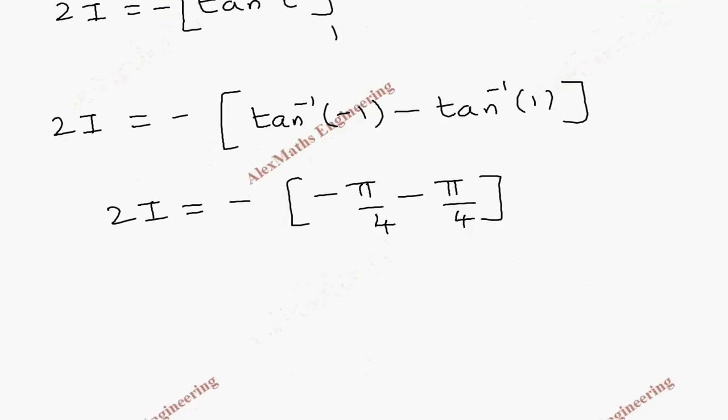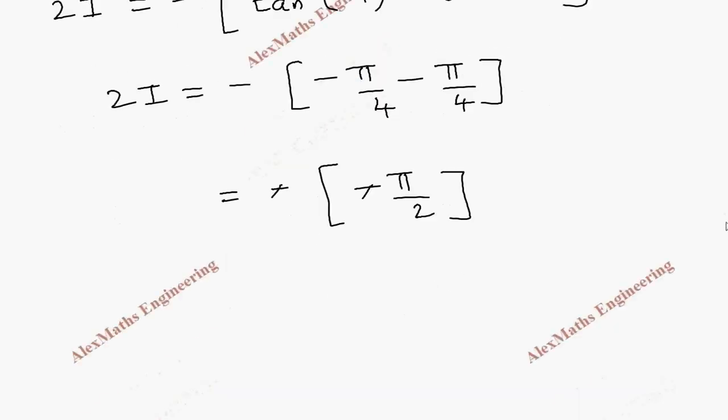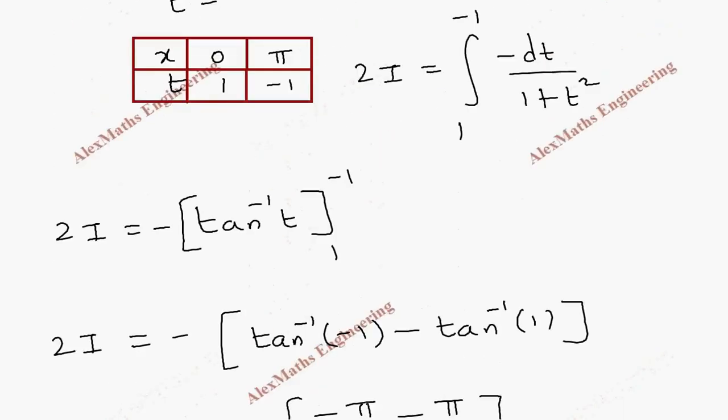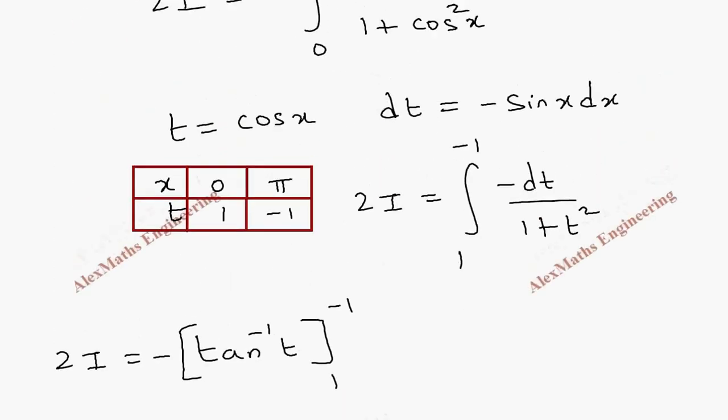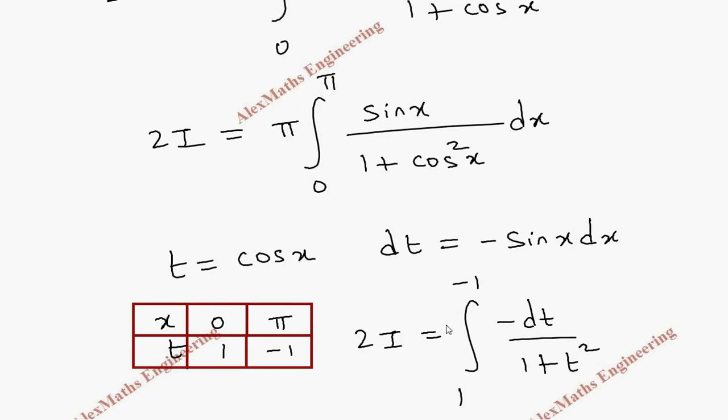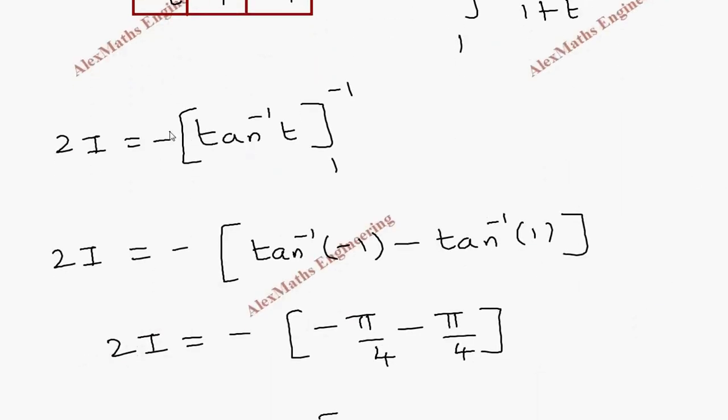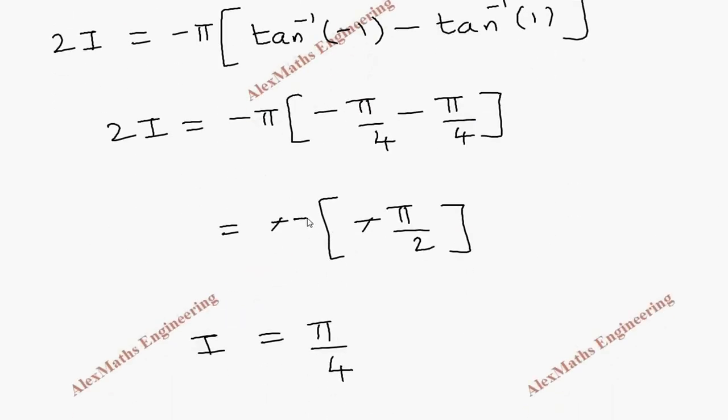By adding minus π by 4 and minus π by 4, we get minus π by 2. And we can cancel these two. So 2i equal to π by 2, so i is π by 4. And also, we had a π outside. So the π should be written here everywhere. And in the final answer, we get π square by 4.